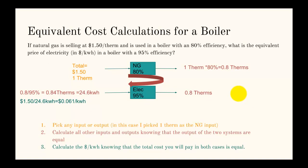This is a typical CEM question of cost equivalency. The case here is that natural gas is selling for $1.50 a therm and is used in a boiler with 80% efficiency. What is the equivalent price of electricity in dollars per kilowatt hour in a boiler with a 95% efficiency? With problems like this, these are the three steps I like to do.